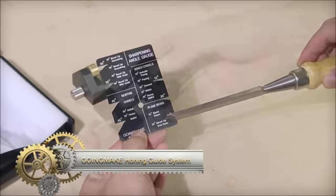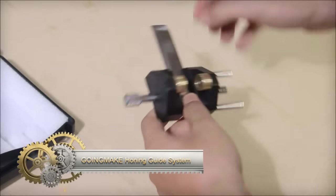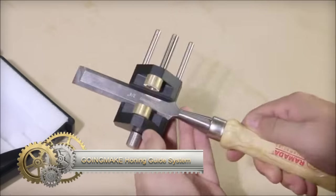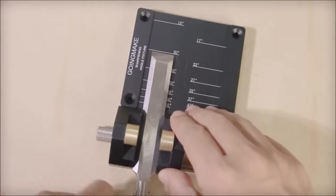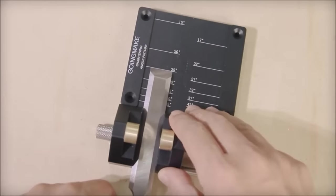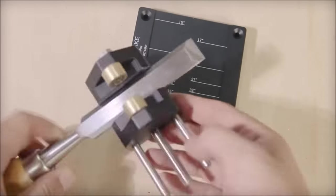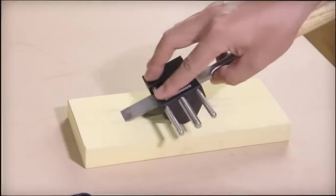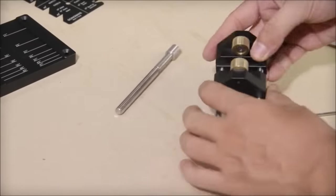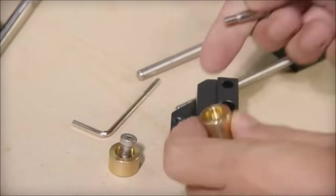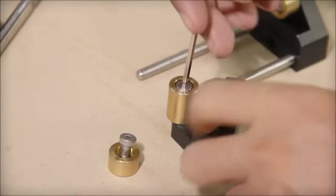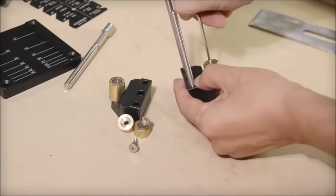The Going Make Honing Guide System Chisel Sharpening Kit is a versatile and user-friendly solution for maintaining the sharpness of your woodworking chisels and planes. This comprehensive kit includes a durable aluminum honing guide with user-friendly features like a micro bevel adjustment knob for precision sharpening, a secure locking mechanism, and a non-slip handle for comfortable use.